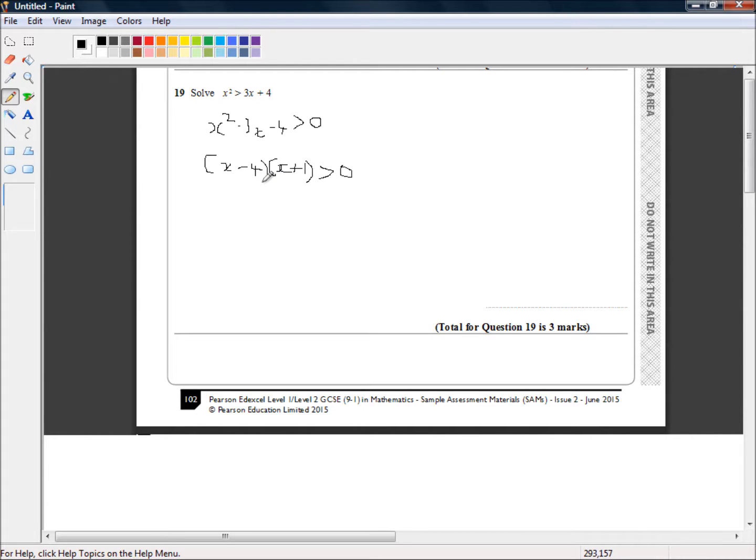So what happens if x is between negative 1 and 4? Let's just plug that in and have a look. If x is less than 4 then this term is going to be negative because a number smaller than 4 is being taken away from 4 so we're left with a negative term. And if x is greater than minus 1 we know that if x was equal to minus 1 then this would be 0.